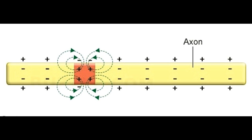Glial cells are a type of cell responsible for the maintenance of neurons. Maintenance includes everything from supplying oxygen, insulation, and holding neurons in place, to discarding dead neurons. Demyelination in some cases destroys these cells, especially the ones producing myelin — oligodendrocytes. The only way to restore efficient functioning of neurons is to reconstruct myelin, which is possible only if oligodendrocyte precursor cells exist.